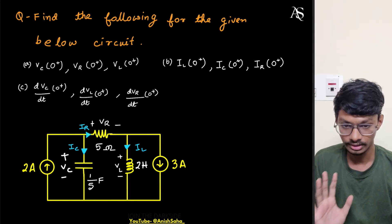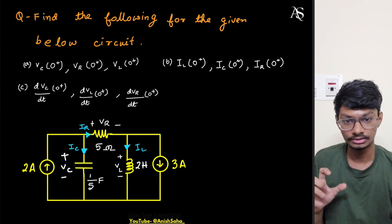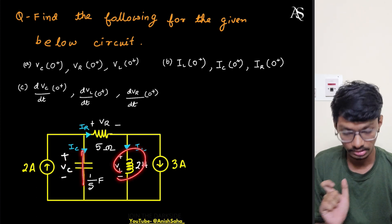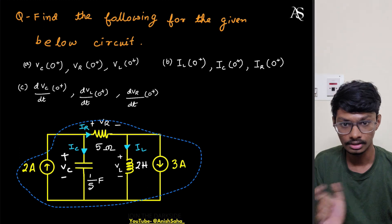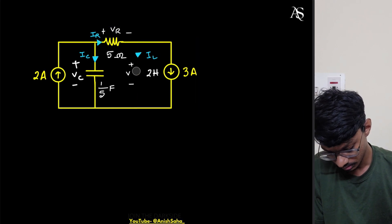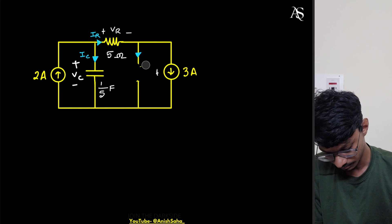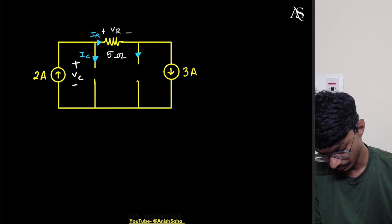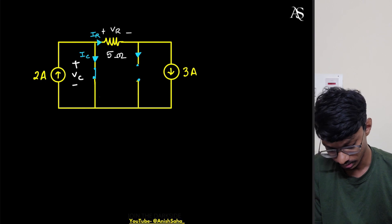First, we consider what replaces the circuit elements. Initially, all capacitors and inductors have no energy. So for a capacitor with no energy, the voltage across it is zero — it gets short-circuited. For an inductor with no energy, the current through it is zero — it becomes open-circuited. I'll draw the equivalent circuit: open circuit the inductor, short circuit the capacitor.